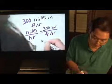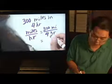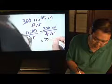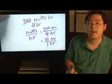Four actually does go into three hundred evenly, so four goes into three hundred, as a matter of fact, seventy-five times. So you have seventy-five miles in one hour.